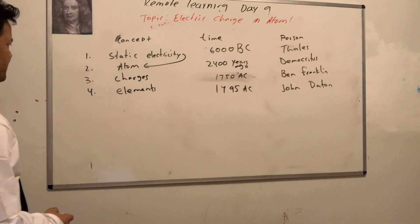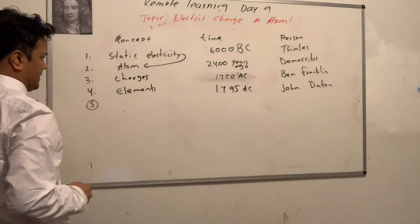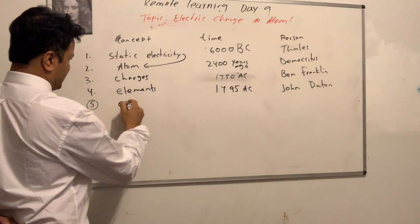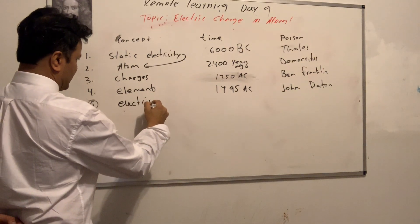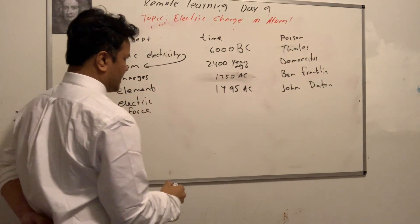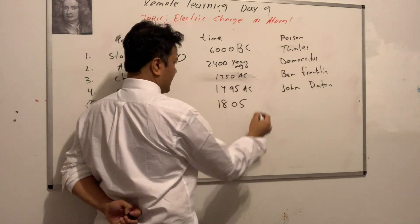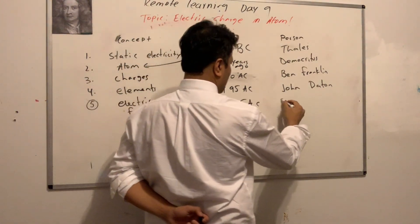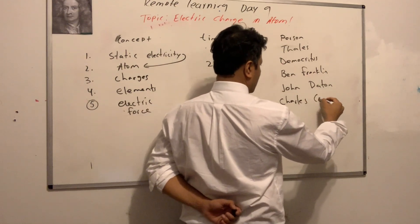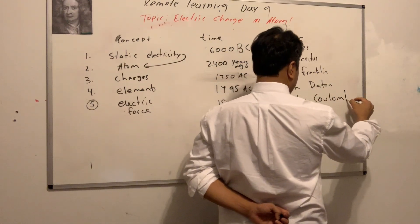The next big thing is electric force, and that happened in 1805. The name is Charles Coulomb.